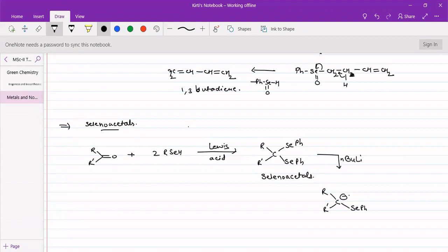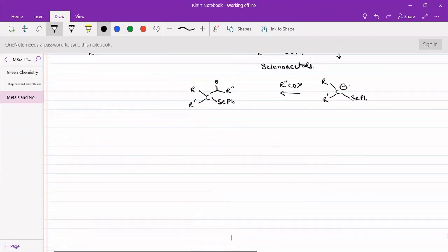This carbanion can then further be reacted with very many different types of reagents like for example acyl chlorides, or it can react with carbon dioxide to form carboxylate.